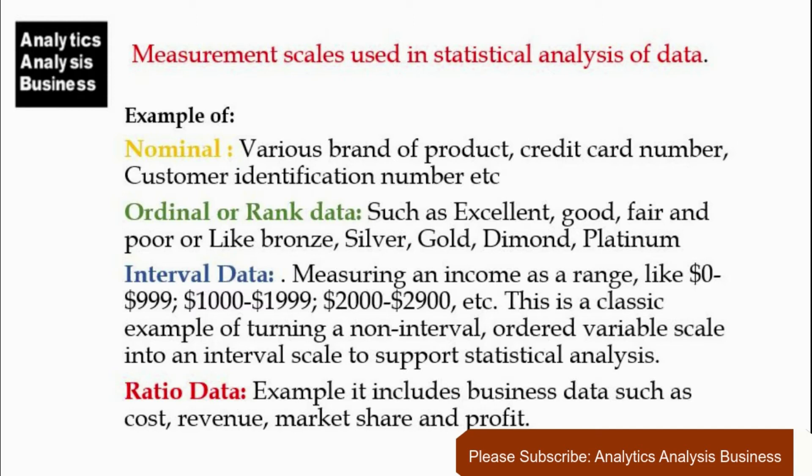Ordinal or rank data — numbers are used to rank objects or attributes, such as excellent, good, fair, and poor, or bronze, silver, gold, diamond, and platinum. In ordinal data, the distance between objects or ranks cannot be measured.